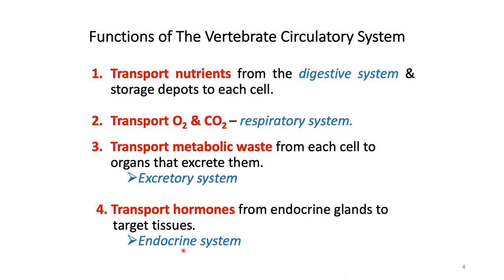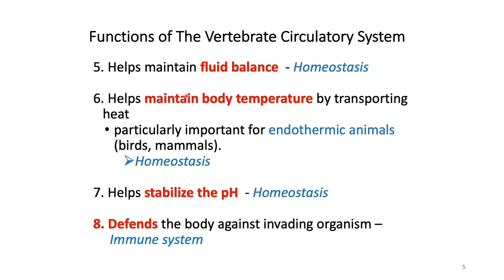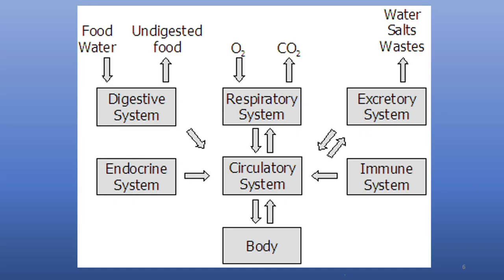The circulatory system also transports metabolic waste from each cell to organs that excrete them — that is our excretory system. It transports hormones from endocrine glands to target tissues. It helps maintain fluid balance and body temperature by transporting heat, which is particularly important for endothermic animals such as birds, mammals, and humans. It also helps stabilize pH and defends the body against invading organisms — that is our immune system.